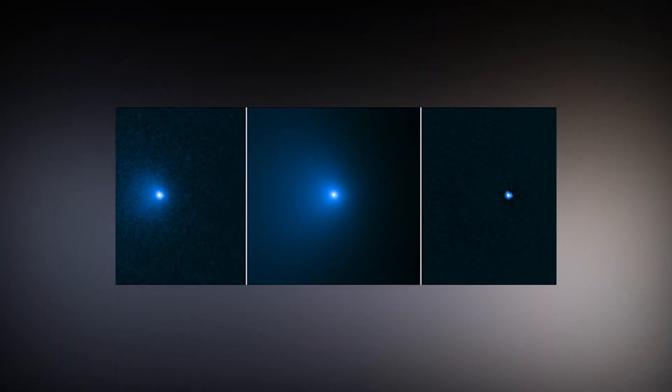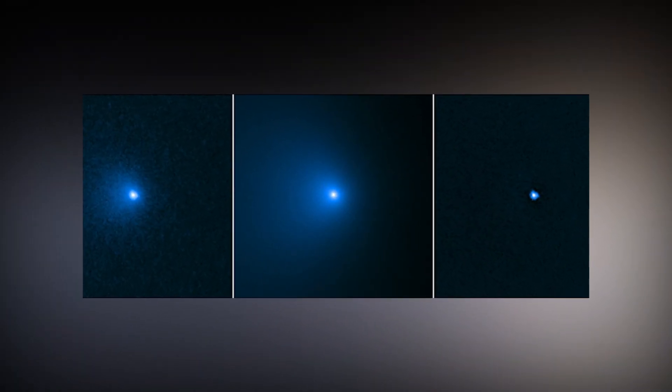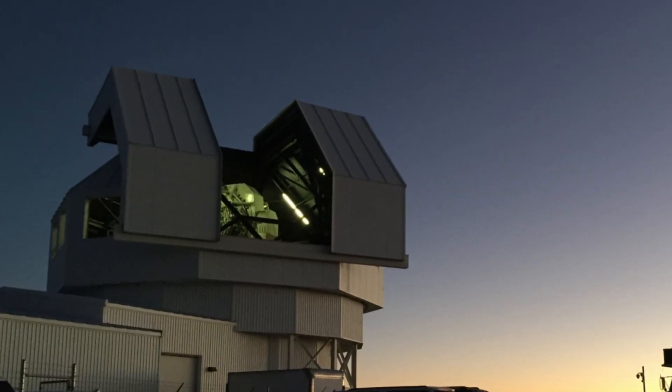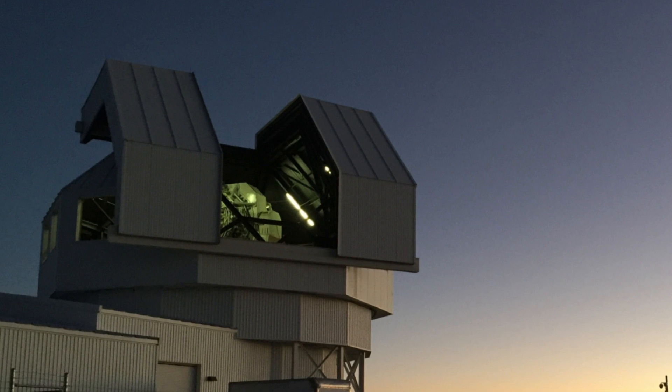Comet C2002VQ94, with an estimated 60-mile-wide nucleus, held the previous record. The Lincoln Near-Earth Asteroid Research, LINEAR, project detected it in 2002.